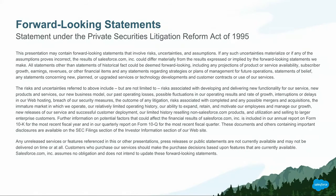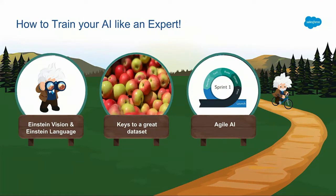First thing we're going to go over is that any purchasing decisions you make here at Salesforce have to be based on currently available technology. The really cool thing about this session is that everything we're going to talk about you could go out and use today. This session is going to cover three things: what is Einstein Vision, what is Einstein Language, what are the keys to a great data set, and the concept of Agile AI.